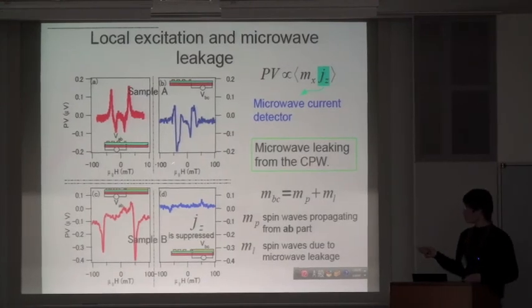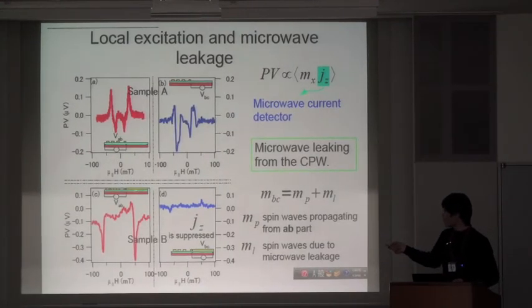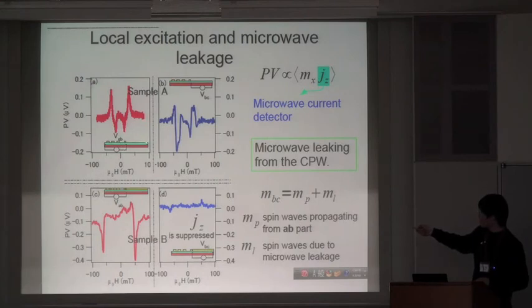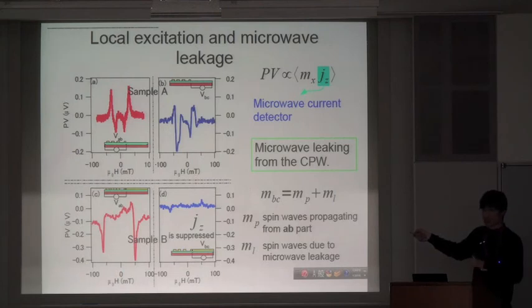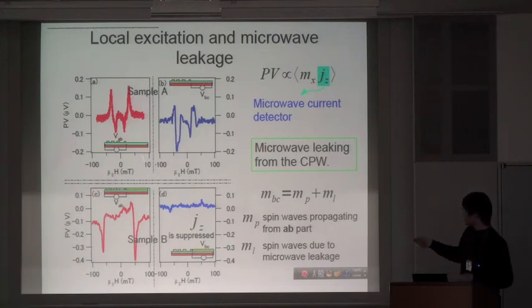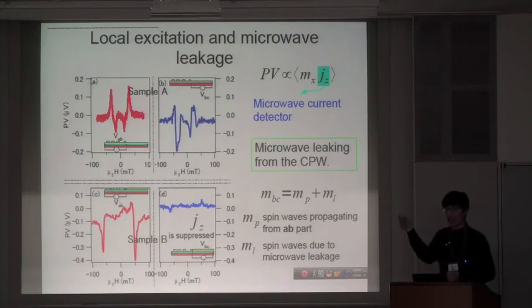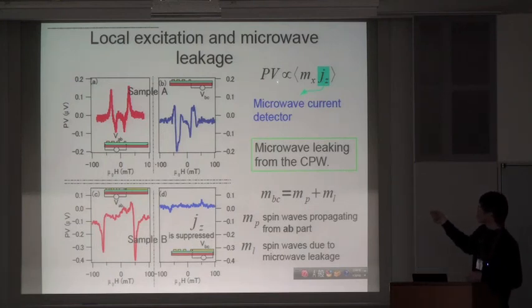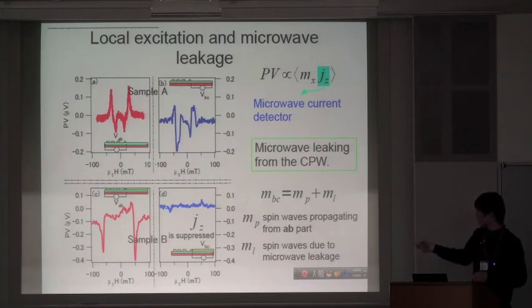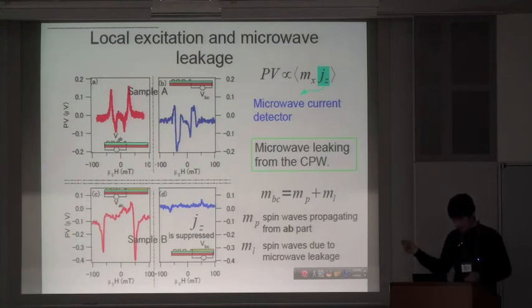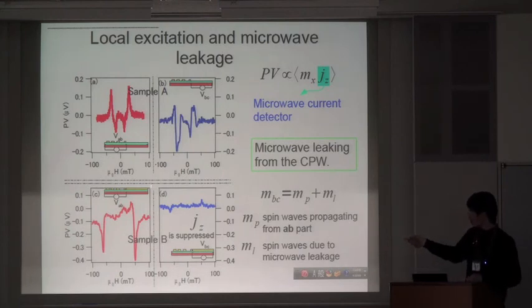And we confirmed that, we have two samples. We screened this part. The difference is sample A, we don't have at this area gold metal on the top. But in sample B, we covered this area with gold. And then we can use as a screen layer. And then we also know that the photo voltage is proportional to M product J, and this J is the microwave current. That means this voltage also can be used as a microwave current detector. And we can find, once we cover this range, the signal is suppressed. That means by this screen layer, we suppress the microwave leaking, the non-local excitation here.